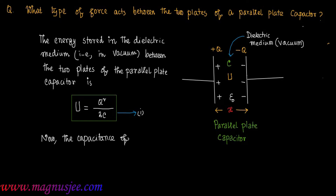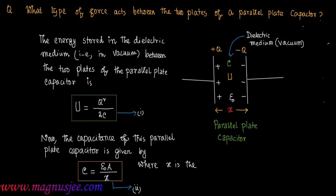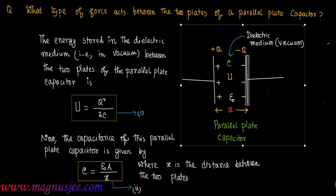The capacitance of this parallel plate capacitor is given by C equal epsilon 0 A divided by X, where A is the area of cross section of each plate and X is the distance between the two parallel plates. This is equation 2.